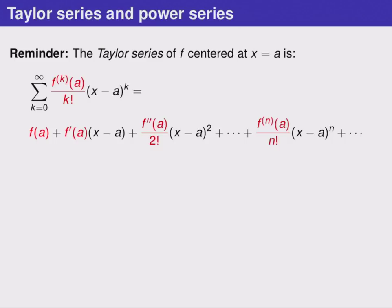The Taylor series of a function f centered at x equals a is given by this infinite series below. The parts highlighted in red are often called the coefficients of the series because they're the numerical values in front of the polynomial parts of the series. It's worth taking a close look at these. Each of these red highlighted parts involves a derivative of the function f evaluated at x equals a and a factorial.